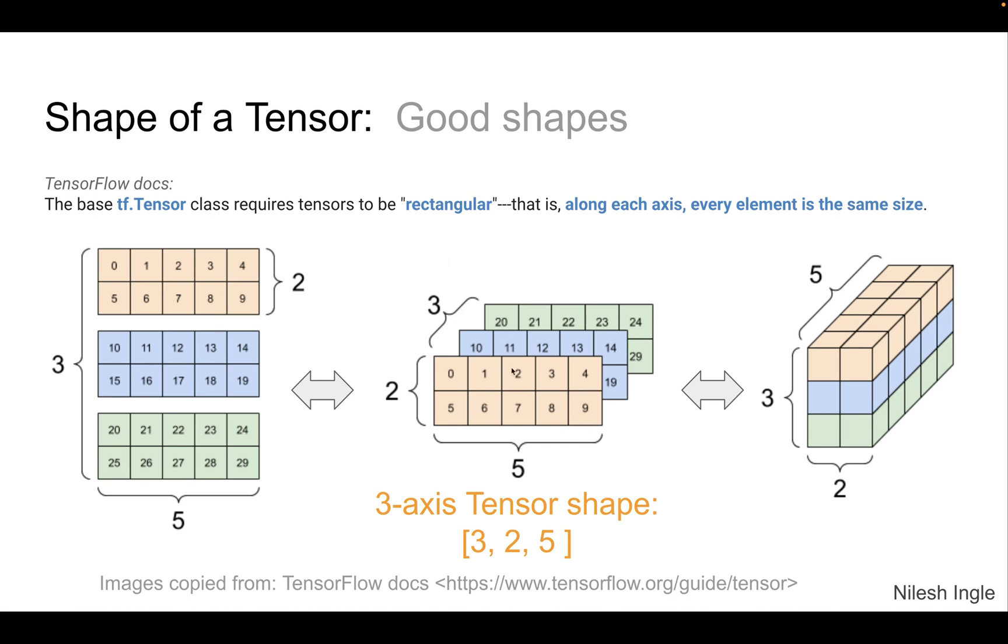And similarly, if we look at the vertical height, all these three rectangular boxes, orange, blue and green, they have the same height, which is two. And so that's why, as you can see up here, it's written, every element is the same size.